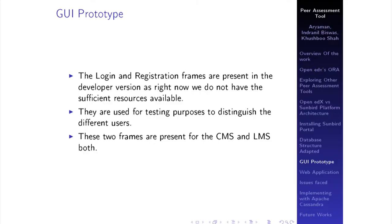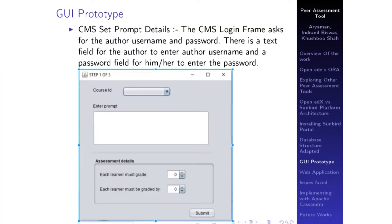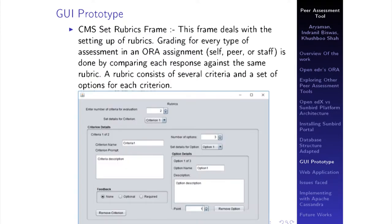Our first approach was developing the GUI prototype, developed in Java. We included login and registration frames, but when our tool is integrated with the Sunbird platform those will not be needed — they are only required for the developer version. In the first frame, the instructor sets the questions and specifies the minimum number of peers each learner must be graded by, and how many peers each learner must grade. Then the rubrics are set — rubrics are a collection of criteria on which peer evaluation is based.